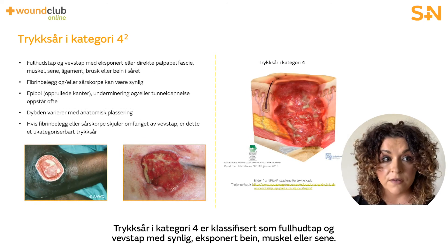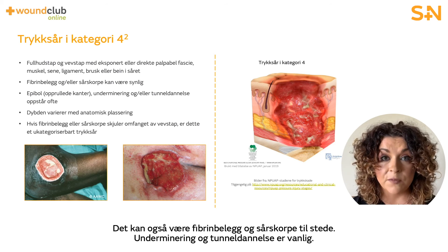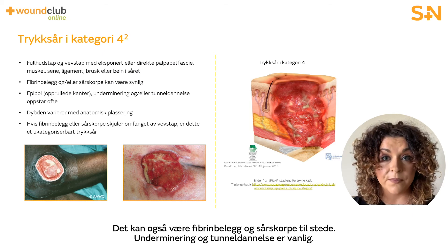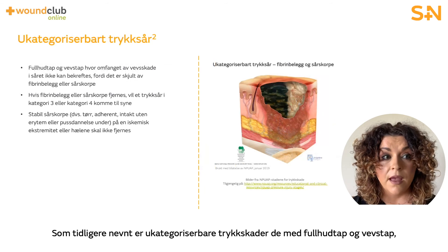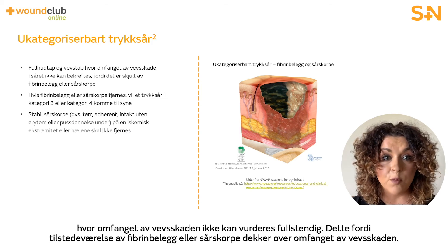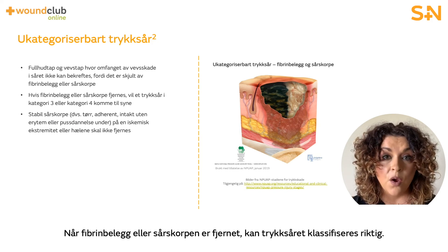Category 4 pressure ulcers are classified as full thickness skin and tissue loss with visible bone, muscle, or tendon. There may also be slough and eschar present, and undermining or tunnelling is common. Unstageable pressure ulcers are those with full thickness skin and tissue loss in which the extent of tissue damage cannot be fully assessed, as slough or eschar is covering it. Once the slough and eschar have been removed, the pressure ulcer can and should be classified correctly.